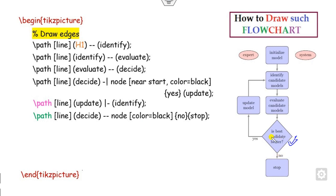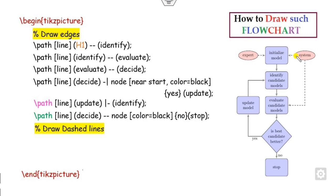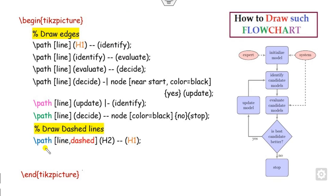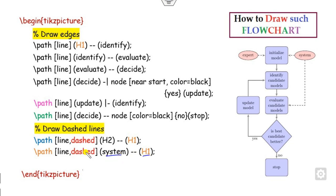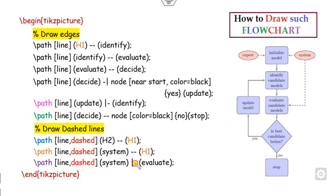After that, you have to draw the dotted lines. To draw a dotted line, you start from the expert node and go to the initialization model. The label of expert is h2 and the label of initialization model is h1. You write h2 to h1, but use 'dash' style for the dotted line. Similarly, for the system node — label is 'system' — you draw from system to h1. For this path, you first go vertically then horizontally, from system to label r.